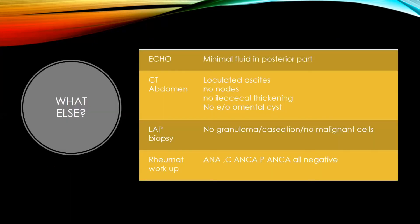Echo was done which showed minimal fluid in the posterior part. CT abdomen showed only loculated ascitic fluid — there were no nodes, no ileocecal thickening, or omental cyst. The child was referred to gastroenterology and with no further clues underwent a laparoscopic biopsy, which again showed no granuloma, caseation, or malignant cells. She also underwent rheumatological workup which was negative for ANA, C-ANCA, and P-ANCA.